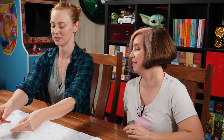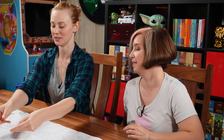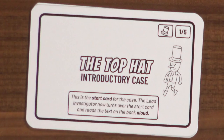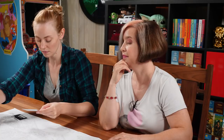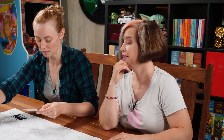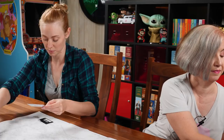Let's do the introductory case. The top hat card. This is the start card - the lead investigator turns over the start card and reads the text on the back aloud. Introductory case: Fernando Bronco was on the way to his local pub. Upon arrival he noticed that his top hat had disappeared. The pub is located in the east of the city between Neptune Park and the hardware store.